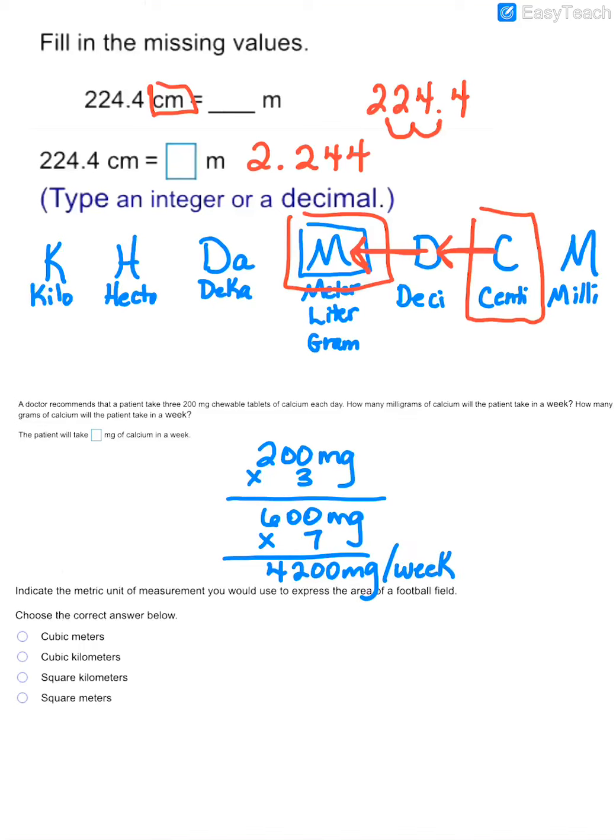Now they're asking me how many grams will the patient take in a week? So now I'm going to have to convert milligrams to grams. So if I go back up to my chart, my milligrams are here. My grams would be in the middle. So notice I am moving one, two, three places to the left.